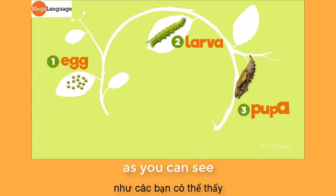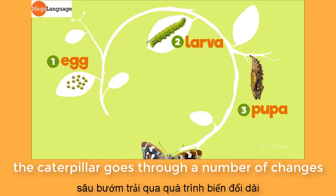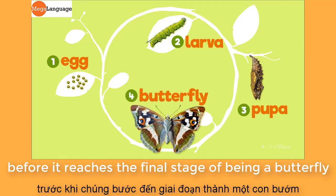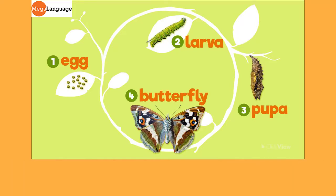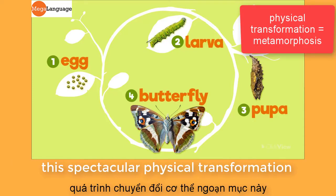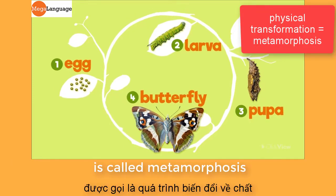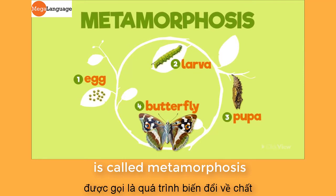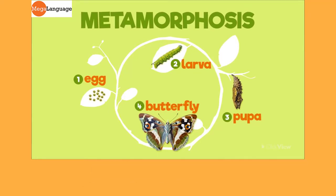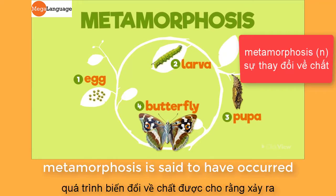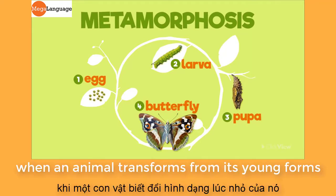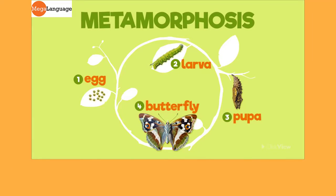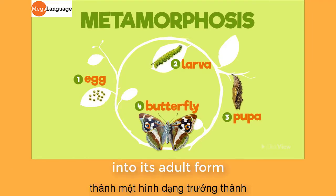As you can see, the caterpillar goes through a number of changes before it reaches the final stage of being a butterfly. This spectacular physical transformation is called metamorphosis. Metamorphosis is said to have occurred when an animal transforms from its young form into its adult form.